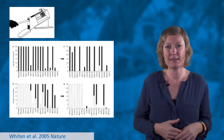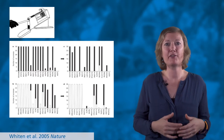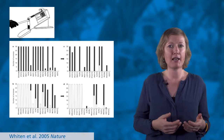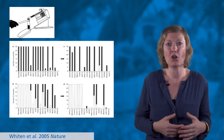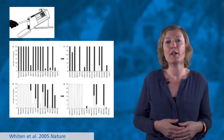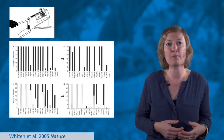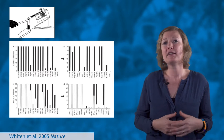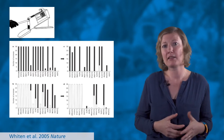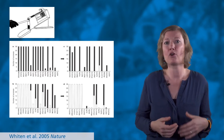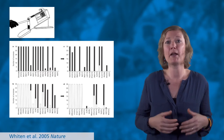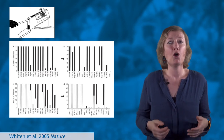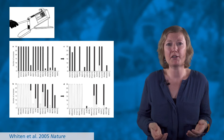A subset of chimpanzees that discovered the alternative method nevertheless went on to match the predominant approach of their companions, showing for the first time a conformity bias — defined as abandoning personal preferences or behaviors to match alternatives exhibited by a majority of others — which was regarded as a hallmark of human culture.